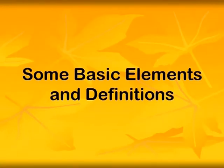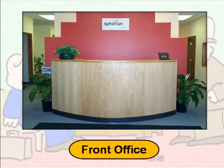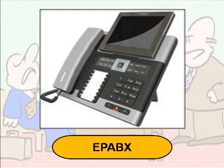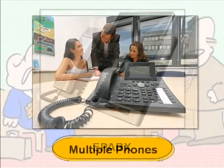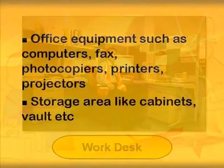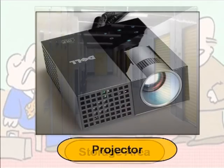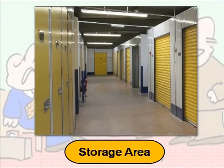Some basic elements and definitions: office infrastructure normally has the following elements — front office or reception equipped with EPABX, multiple phone lines, workstations or work desks, office equipment such as computers, fax, photocopiers, printers, projectors, and storage areas like cabinets.